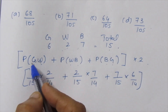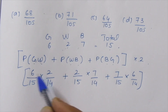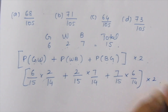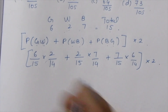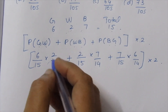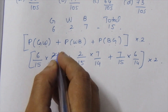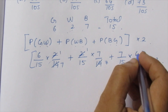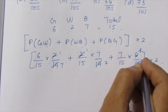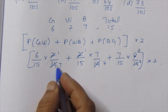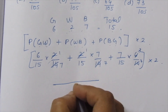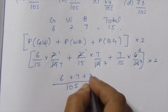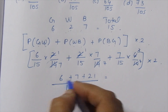Continuing the calculation: black 7 by 15 into white 2 by 15, plus other combinations. Working out numerators and denominators: 6 into 2 is 12, 7 into 2 is 14. Denominator is 105. Numerator sum: 6 plus 7 plus 21 equals 34.